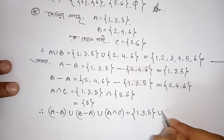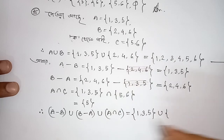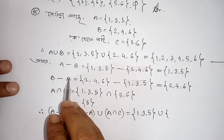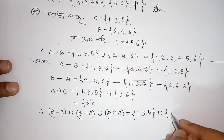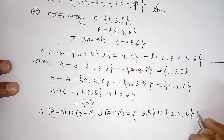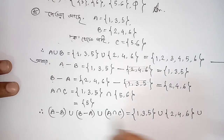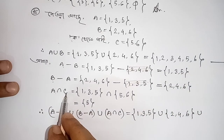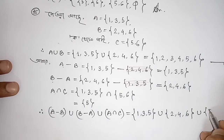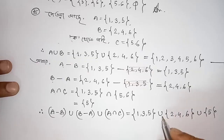2, 4, 6. Union, A intersection is 5. Union, union.